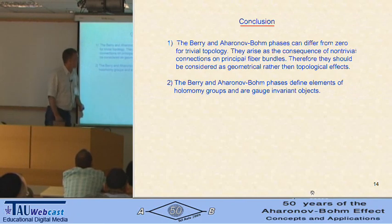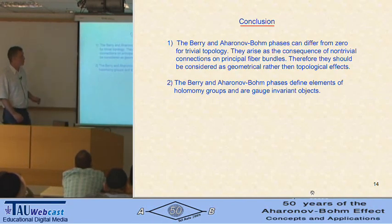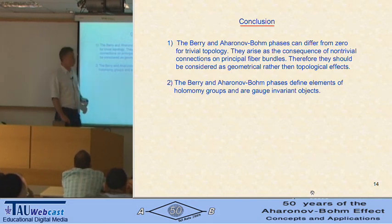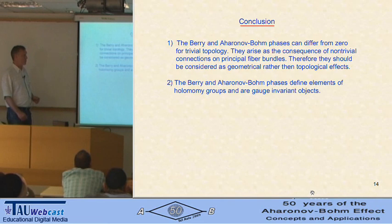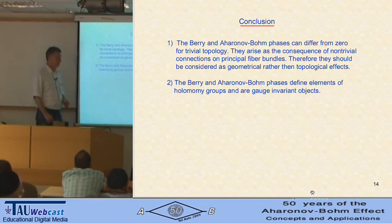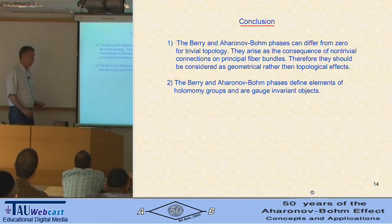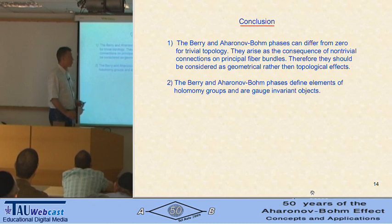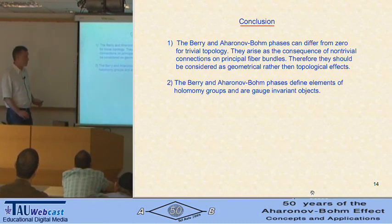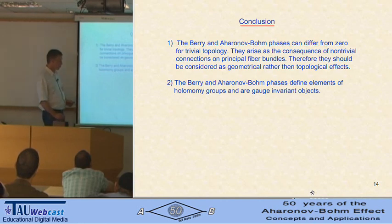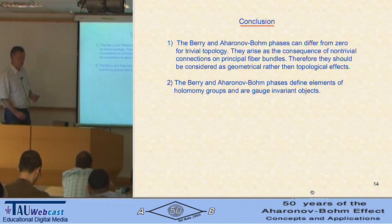In conclusion: the Berry and Aharonov-Bohm phases can differ from zero even for trivial topology. They arise as a consequence of non-trivial connections on principal fiber bundles. Therefore, they should be considered as geometrical rather than topological effects. Non-trivial topology implies non-trivial geometry, but non-trivial geometry may exist even for trivial topology. These phases can exist even for trivially topological problems, and the elements of holonomy groups are gauge-invariant objects.